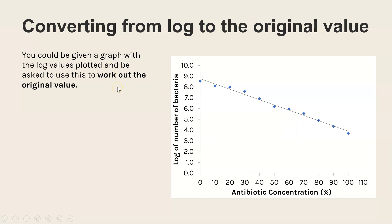So they could give you a graph like this and ask you to work out what the original value was. Here's an example. What number of bacteria grew at 25% antibiotic concentration? Step one, you would need to read off at 25%, go up to the trend line and see what log value we have. So what the log of the number of bacteria is, and that is 7.55.